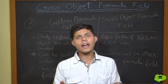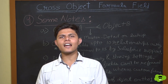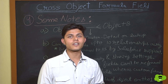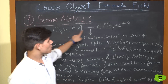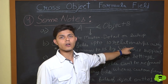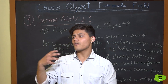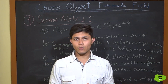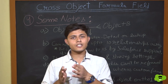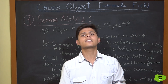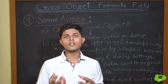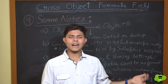Now for the notes to take care of. First, the relationship between Object A and Object B can be either master-detail or lookup — there is no restriction to one type. Second, a cross-object formula field can reference fields up to 10 relationships away from the object it is created on. If you need this limit increased to 15, you can contact Salesforce support.